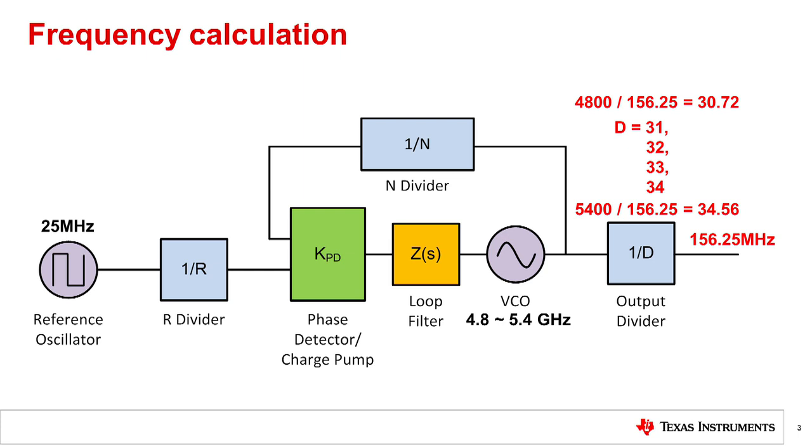For this example, we use D equal to 32. Therefore, the VCO frequency is equal to 5 GHz.